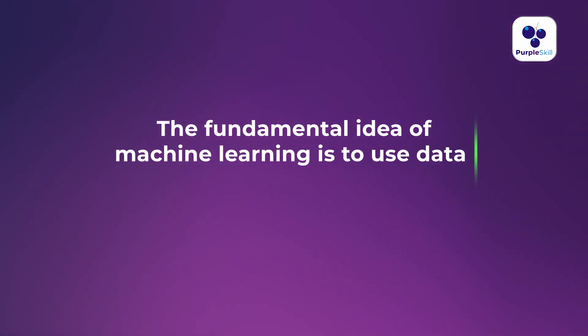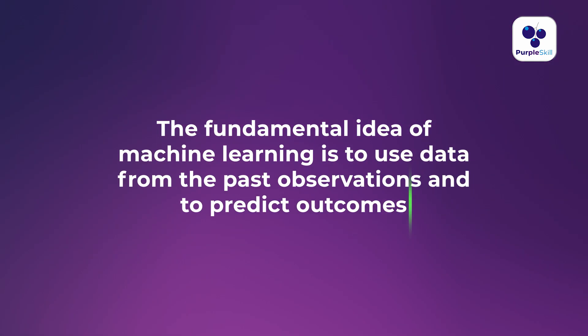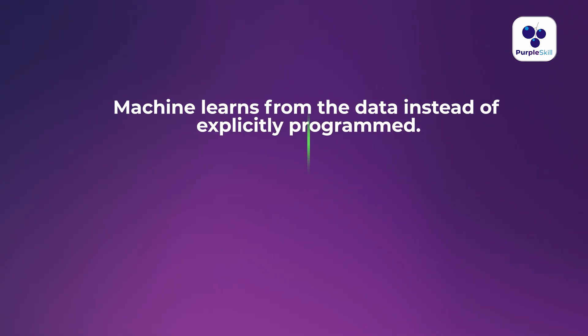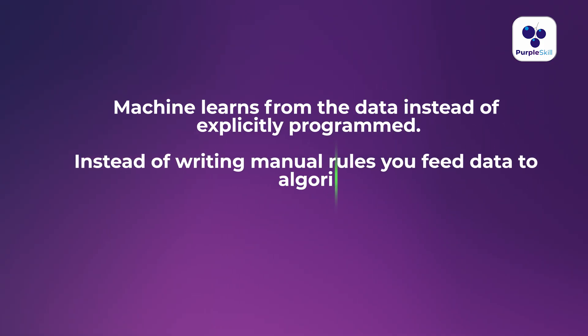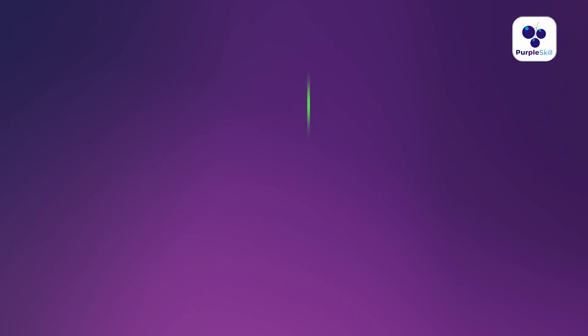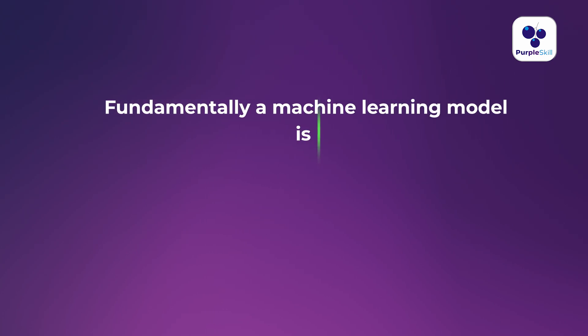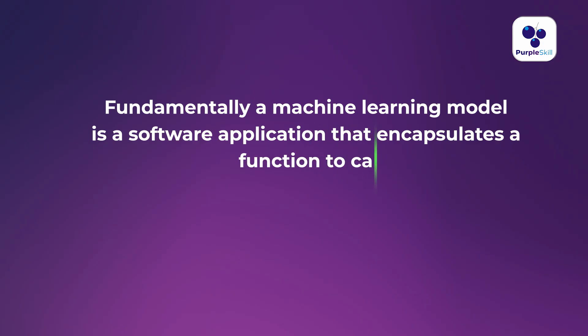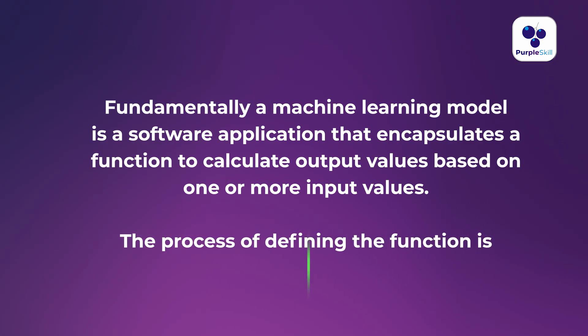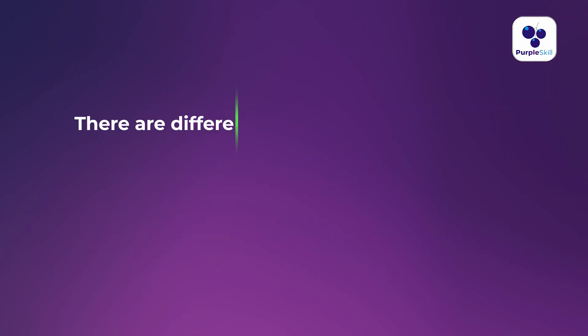Machine learning comes underneath AI. It is where your machine or software system learns from data to make better predictions. The fundamental idea of machine learning is to use data from past observations to predict outcomes. Machine learns from data instead of being explicitly programmed — instead of writing manual rules, we feed data to algorithms and let them find patterns. A machine learning model is a software application that encapsulates a function to calculate output values based on one or more input values, and the process of defining that function is known as training.